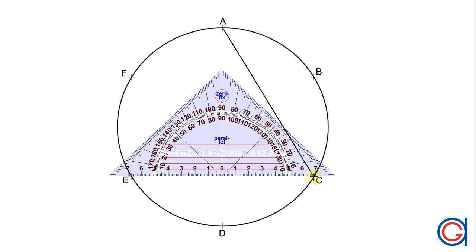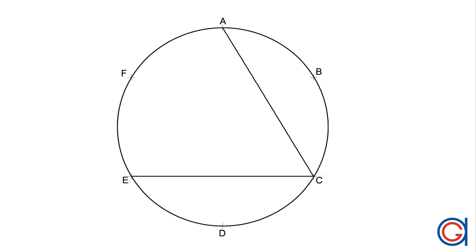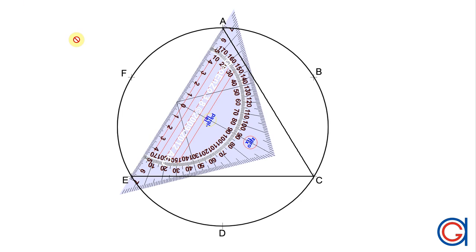We will join vertex A to C, skipping vertex B, from C to E, skipping vertex D, and from E back to A, skipping vertex F.